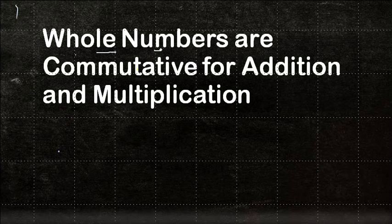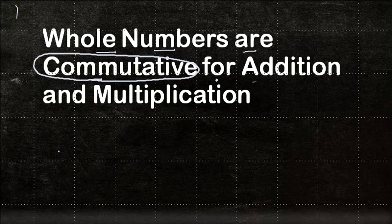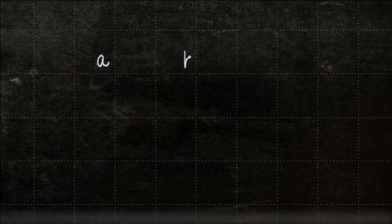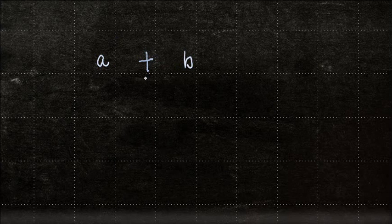Whole numbers are commutative for addition and multiplication. Now, what does this mean? This means that, let's say for example, you have two whole numbers, A and B. And you want to add them. Does it make a difference if I change the order?